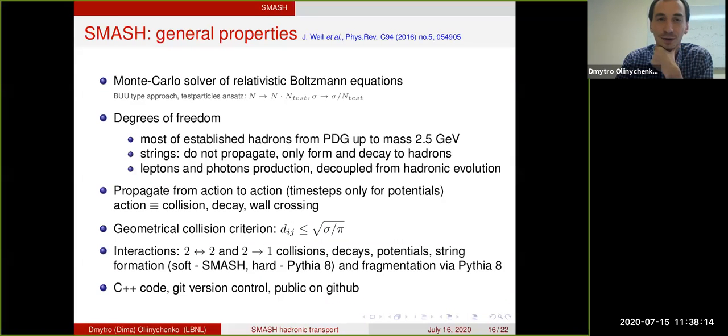What is SMASH in terms of general transport code properties? It is a solver of Boltzmann equations. It is BUU type if you include potentials. The degrees of freedom are most of the established PDG hadrons. Masses go up to 2.5 GeV. There are strings which do not propagate, they're just there for multi-particle production of hadrons. There are also leptons and photons which are completely decoupled, so you have some hadron flying, it can produce leptons and photons. It is not by default, so you have to check on some switch for leptons and photons, and then these leptons and photons are just flying away, they're not interfering with the rest of the evolution.